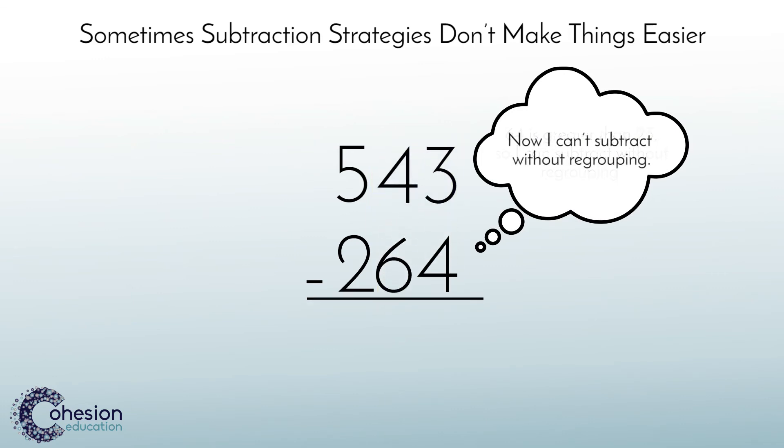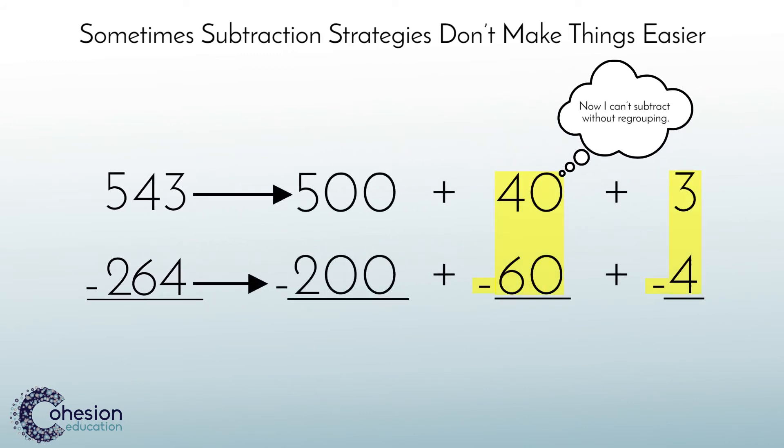If they're not, regrouping is needed, and at that point, place value subtraction would be the best option. When in doubt, always use traditional place value subtraction to subtract a smaller number from a greater number.